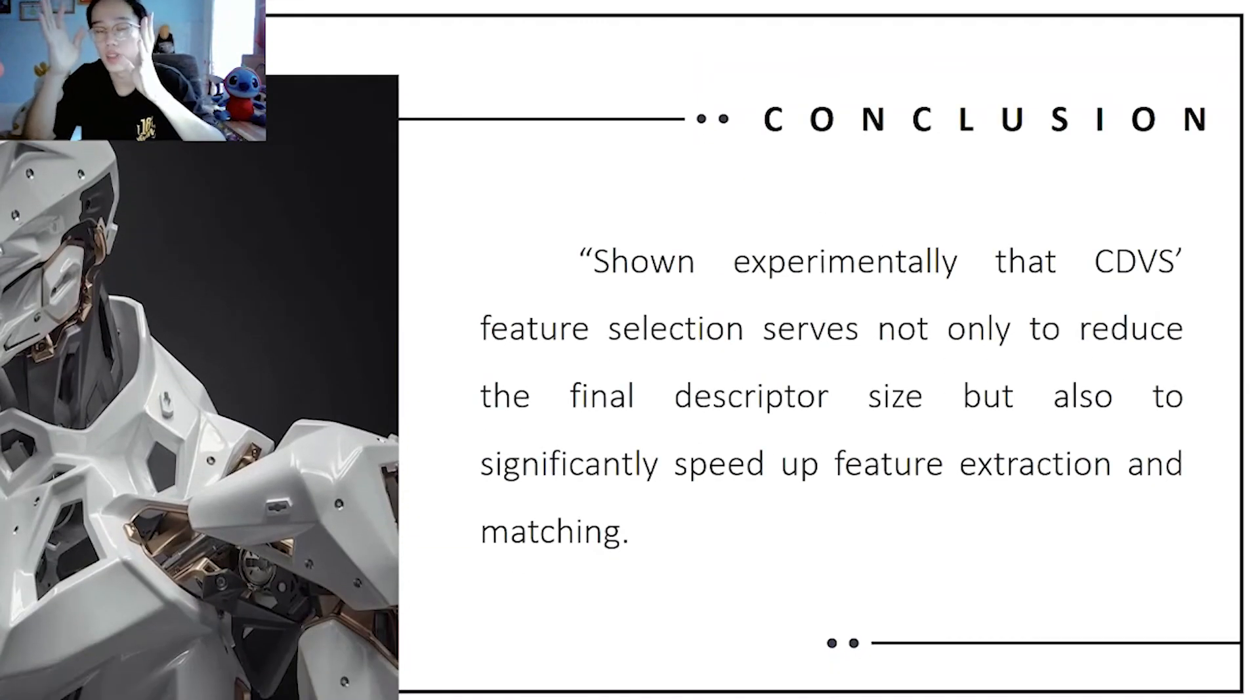Now the conclusion. It is an interactive experiment. Discussion for research on CDBS leads to compression mode, which was shown to be over 20 times faster than standard during matching time and requires 10 times less storage space and is still able to achieve progress with high accuracy. Shown experimentally that CDBS feature selection serves not only to reduce the final descriptor size, but also to significantly speed up feature extraction and matching.